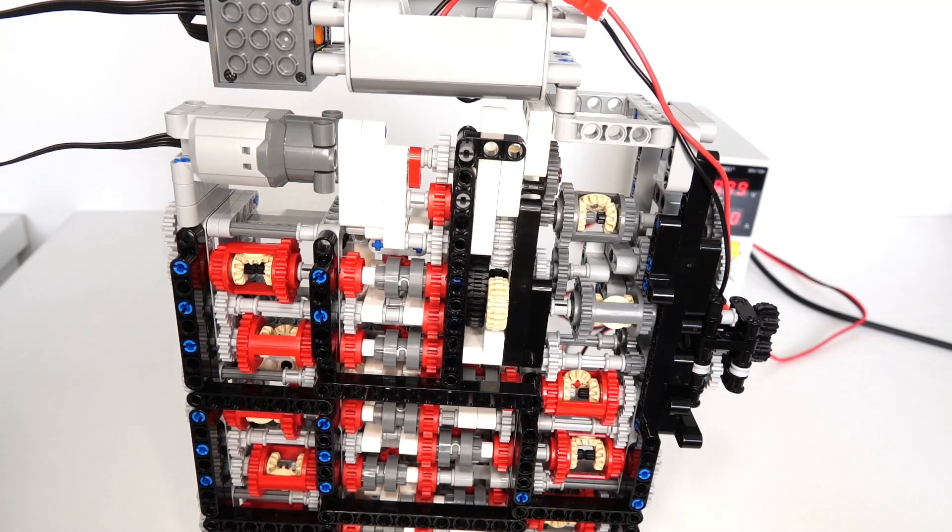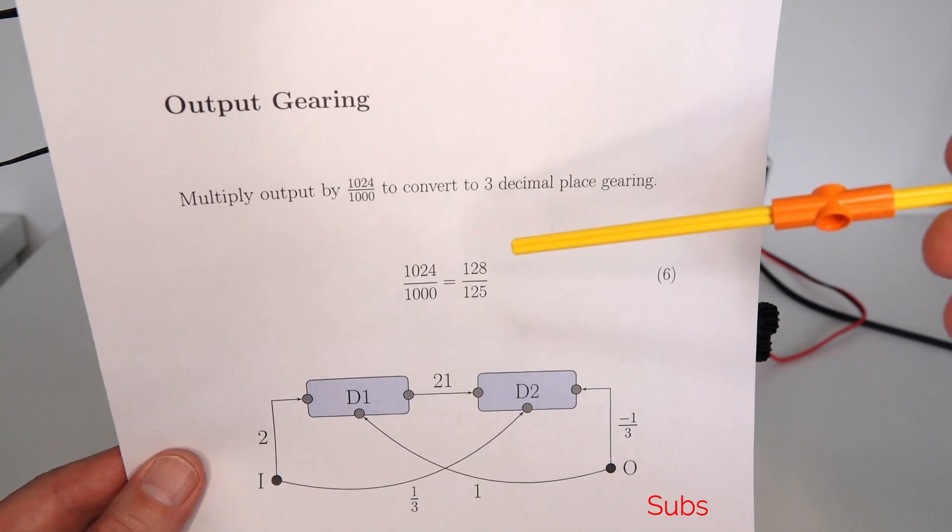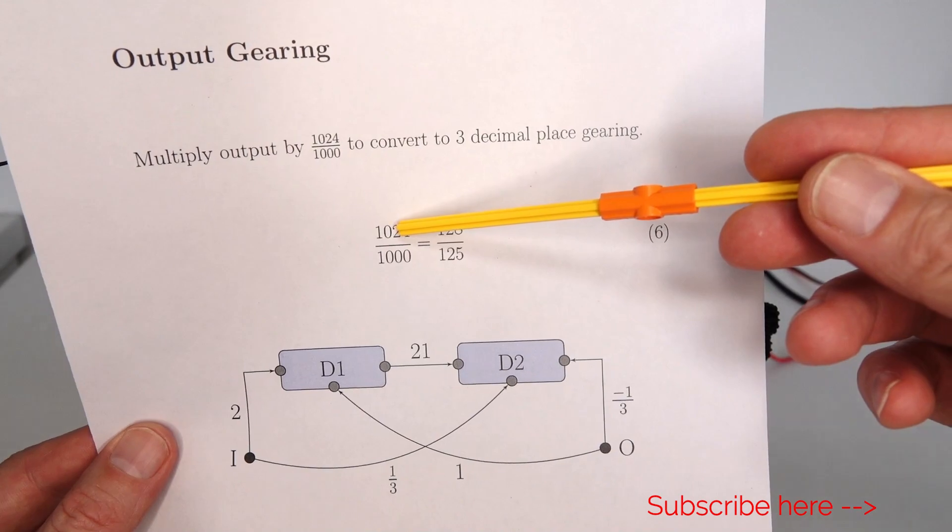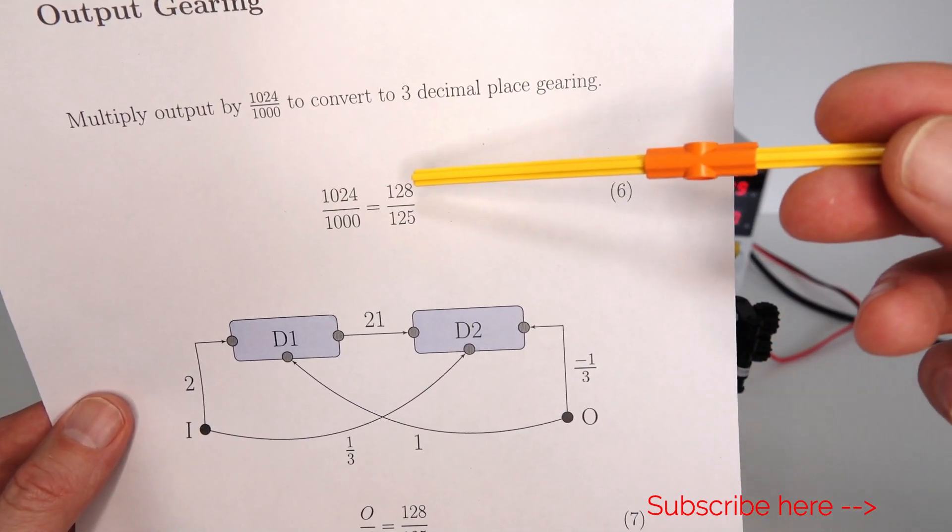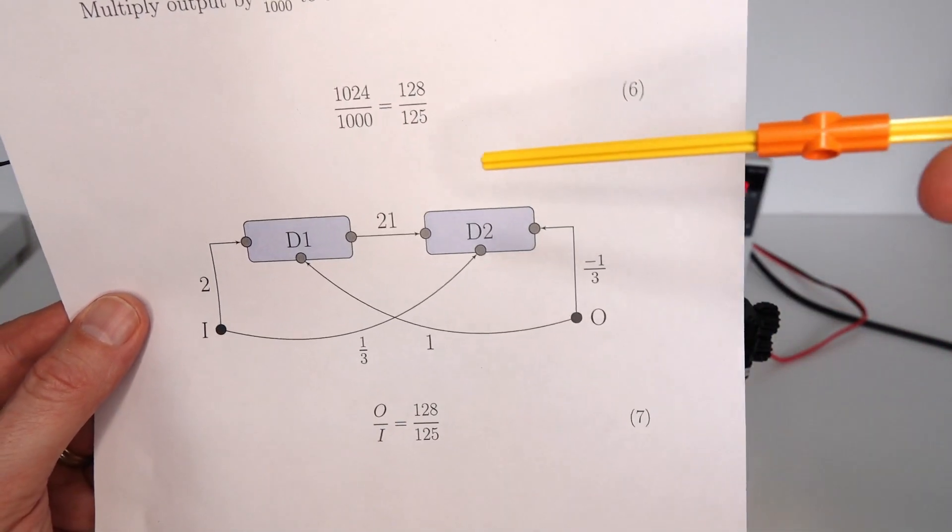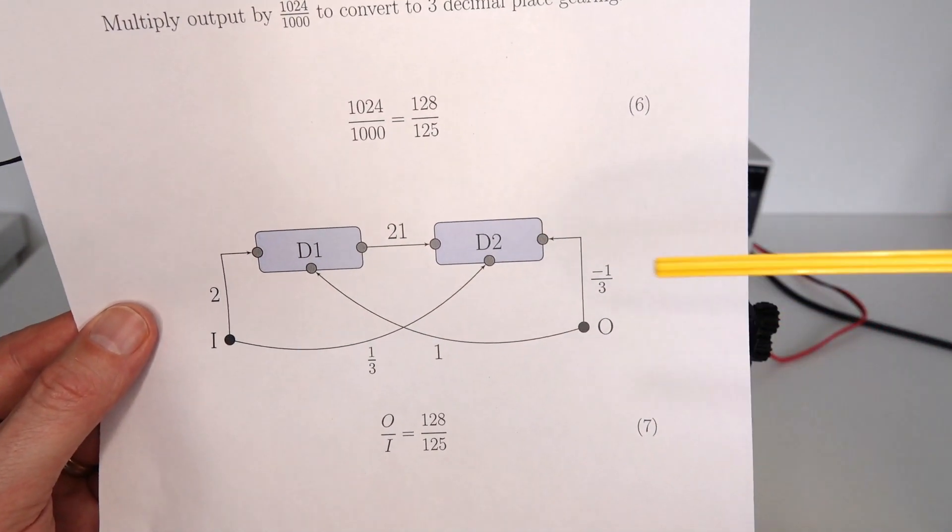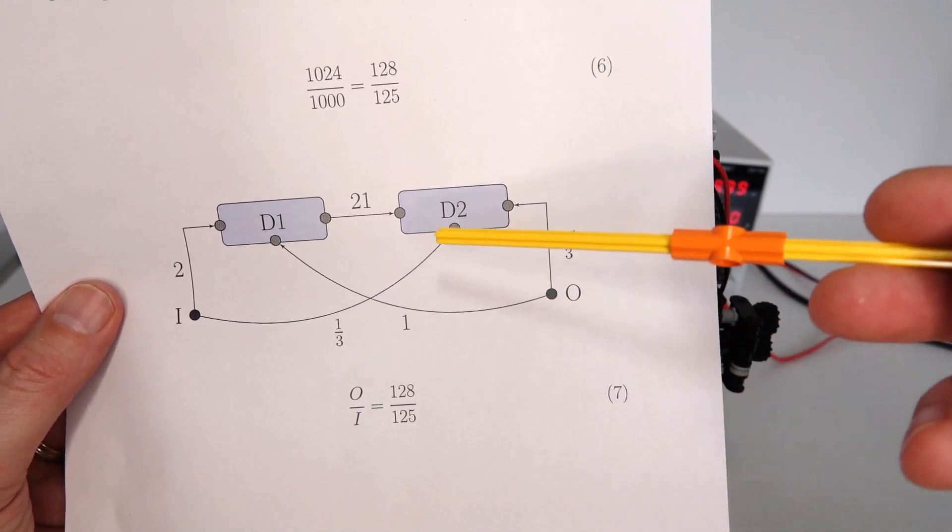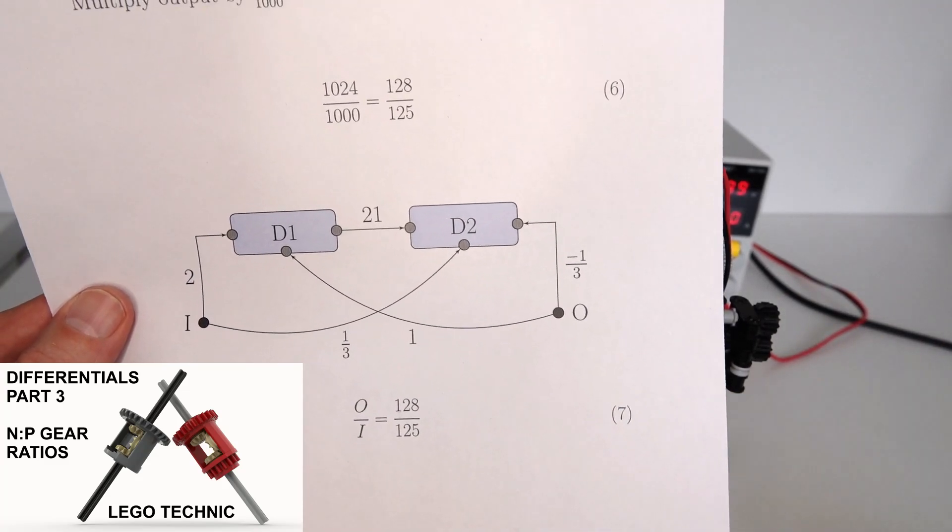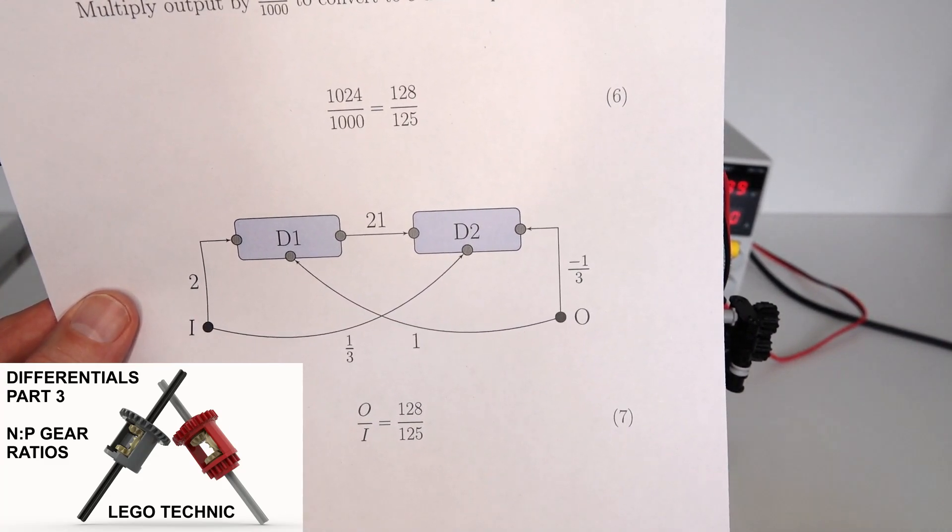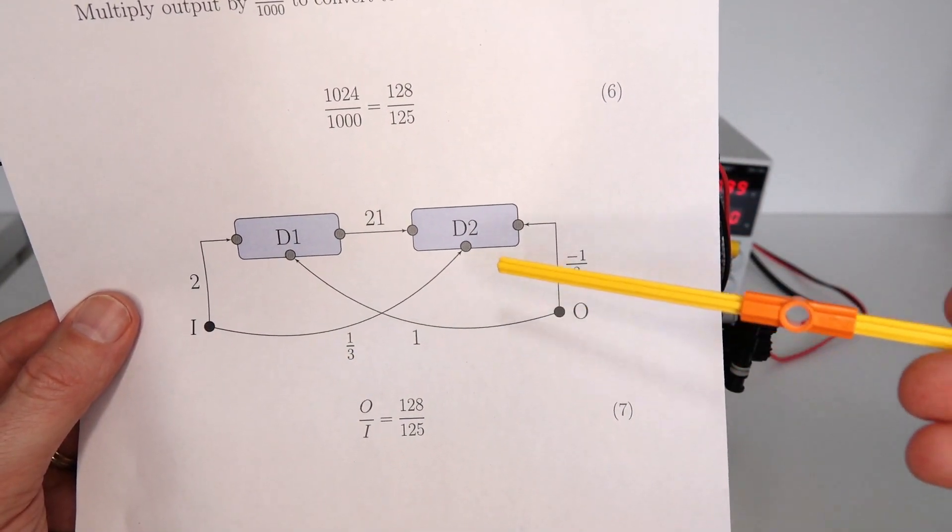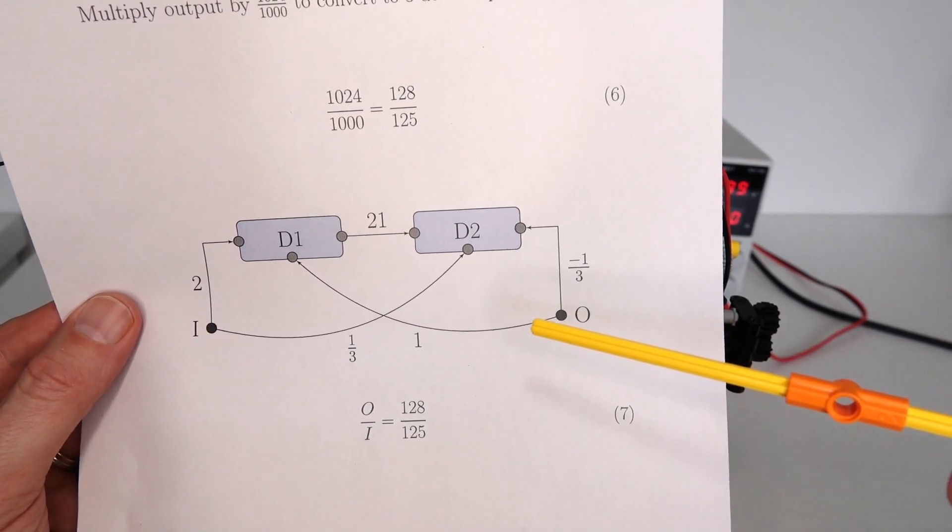It converts that 1024 back down to being out of 1000. The way I've done that is by just multiplying the output through by a gearing ratio of 1024 to 1000, which cancels out the 1024 and makes it out of 1000, which is equivalent to 128 over 125. And I've created this differential system here to create that exact ratio of 128 to 125. The way I've done that is through a video I've done previously on designing N to P gearing ratios using two differentials. By going through that technique, I've come up with this design here, which works very well.